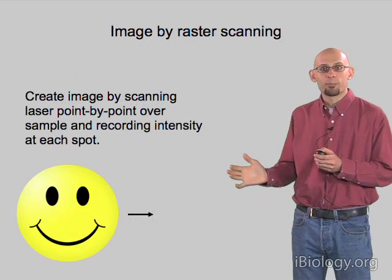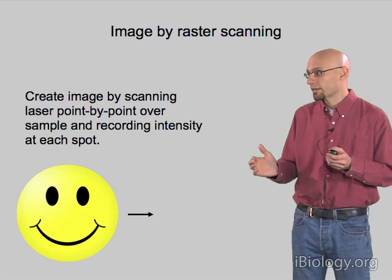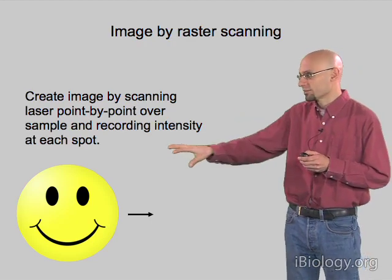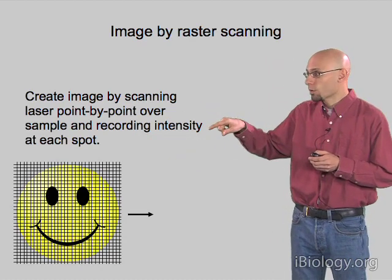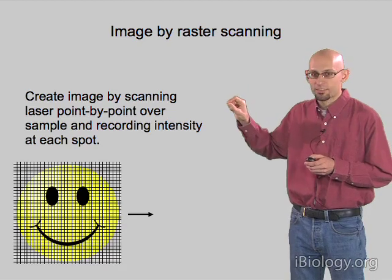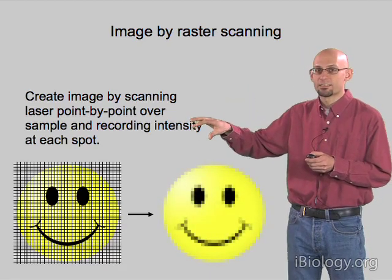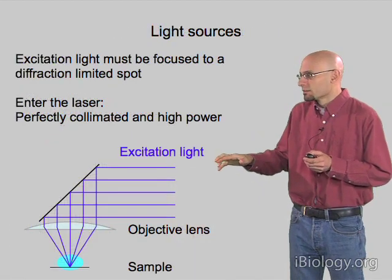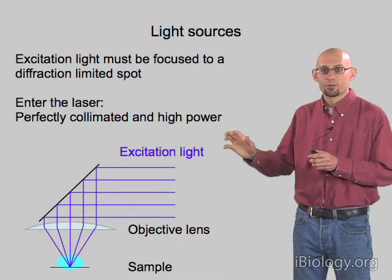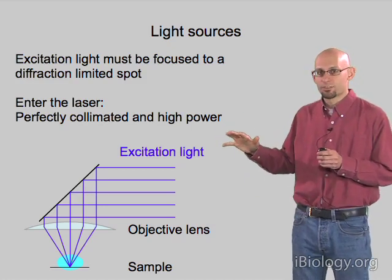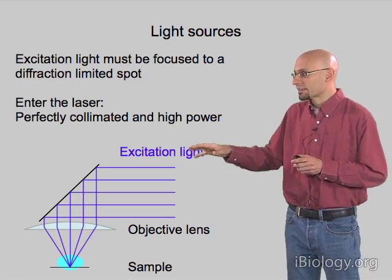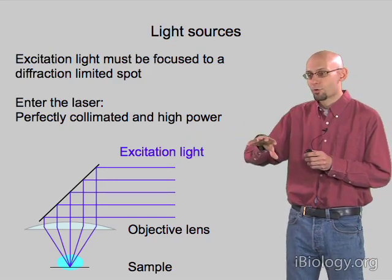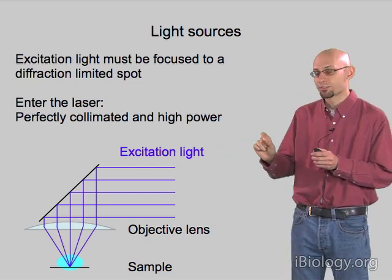The problem now is we're only imaging a single spot, and to get an image you need more than a single point. The way we solve that is by recording lots of different points in our sample arrayed across it — marching the laser spot across the sample point by point, and using that to record the intensity at each spot and reconstruct the image as a 2D grid. We use a laser because it gives highly collimated illumination and high power so we can quickly record the fluorescence from each spot.